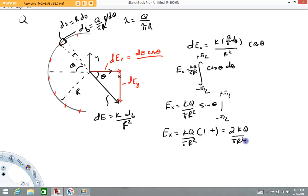That's going to give us the net electric field at the origin due to this charge distribution. If I want to make that into a vector, the electric field vector has a magnitude of 2 KQ over pi R squared, and it's in the plus i direction according to the coordinate system I have shown.